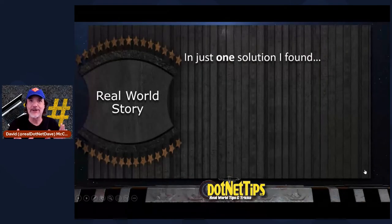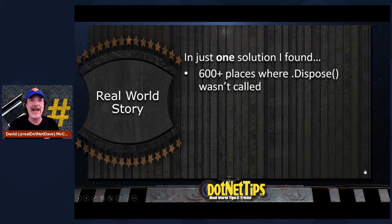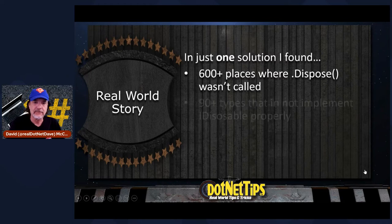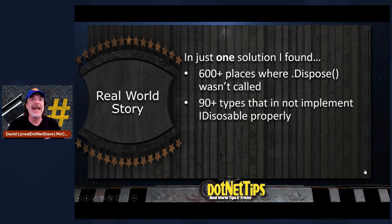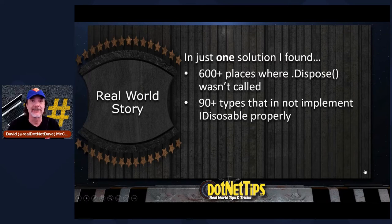In a recent contract I worked on, I found over 600 places in their code where Dispose was not being called. And they had servers they had to reboot multiple times a day because of this. I've never seen a code base so bad as this one as far as memory management goes. They had over 90 types that either implemented iDisposable improperly or didn't implement iDisposable at all. And every time — every type that they implemented iDisposable — they did it wrong. So I'm going to show you the right way, the one right way to do it today.